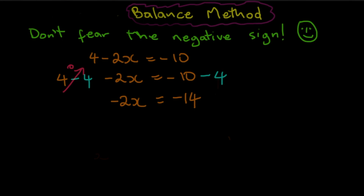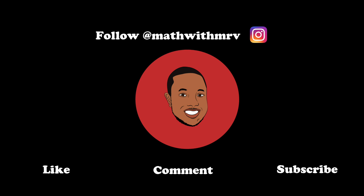Now all I have to do is get x by itself. We tell Mr. Negative 2, leave the x alone, so we divide by minus 2 on both sides. Minus 2 into minus 2 cancels, leaving just x. And minus 14 divided by minus 2 — remember, a negative number divided by a negative number gives you a positive number. So x is equal to 7. Easy!